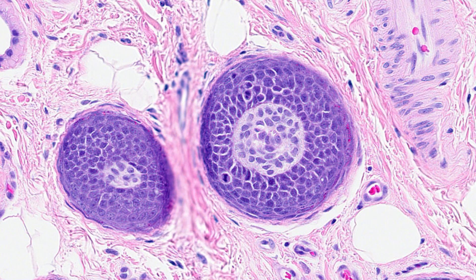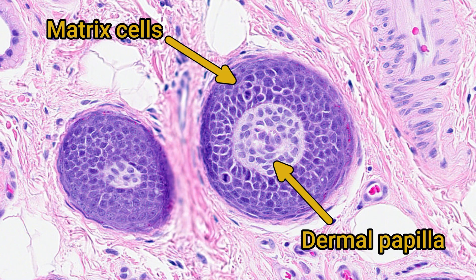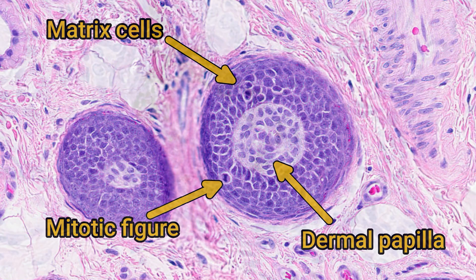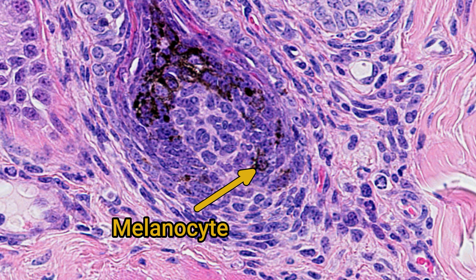The basophilic epidermal cells surrounding the dermal papilla are matrix cells — germ cells that will produce both the follicular epidermis and the hair shaft, so it's common to see mitotic figures in this population. You might also see melanocytes in and around the hair bulb producing pigments that will colour the hair shaft.